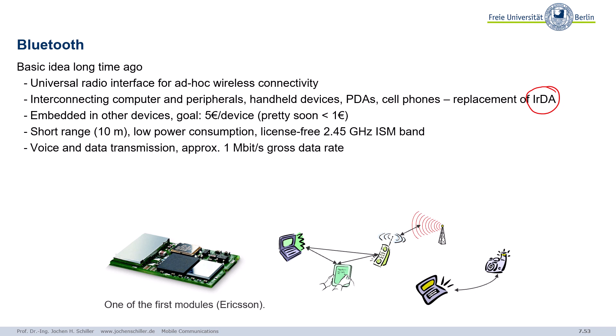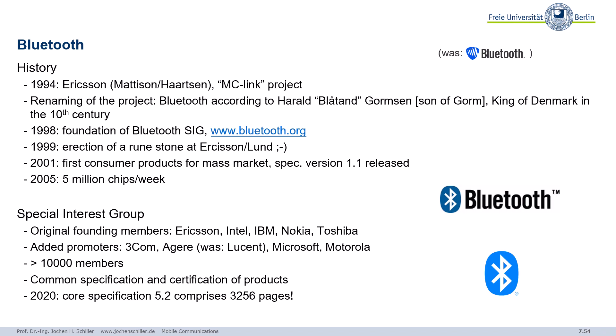So how can we connect computers, peripherals, personal digital assistants, and cell phones without a wire and without using infrared? If we have such a system it must be cheap — extremely cheap. Wireless LAN at the time was too expensive. We don't need high data rates, we don't need to cover long distances, but we need low power consumption, we want to use the license-free ISM band, and we also want to support voice for headsets. One megabit per second is fine. You can see here a picture of one of the first modules from Ericsson.